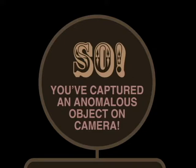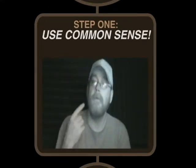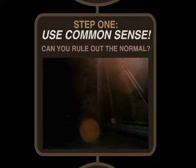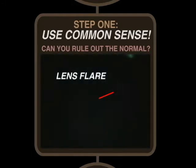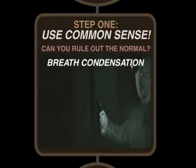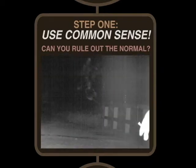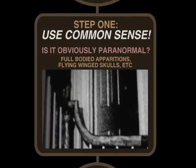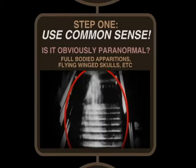To help apply the standard, we developed a flowchart — a step-by-step protocol to help you vet your visual evidence. So, you've captured an anomalous object on camera. The first step: use your common sense. See if you can determine if it's some natural occurrence — lens flare, dust motes, bugs, water droplets, breath condensation, smoke, any of that type of stuff. If you can explain it, you do not have a paranormal photograph. Is it obviously paranormal? Do you have a full body apparition on photo? Then common sense tells you it's probably a paranormal photo.